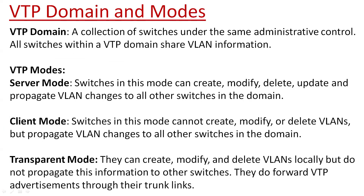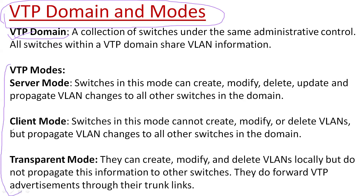To initiate the VTP process, you must provide a domain name — a random name allotted to the VTP. After providing the domain name, VTP will be automatically started. There are three modes of VTP. The first one is server mode, also called master mode, in which we can create, delete, modify, update, and propagate VLAN information to other devices.